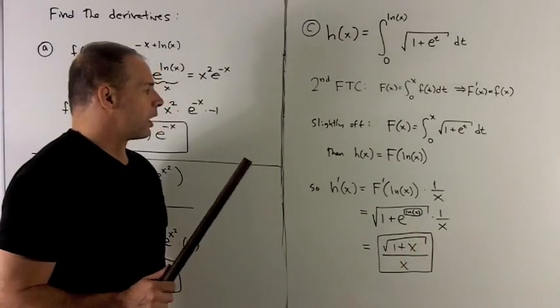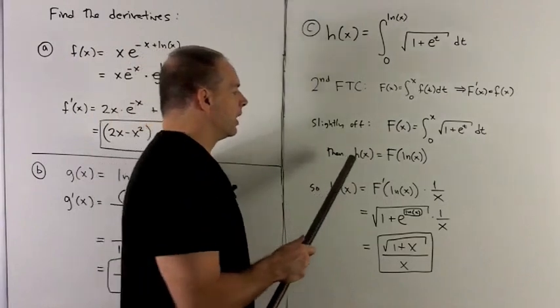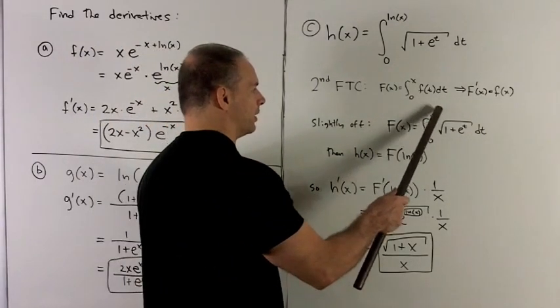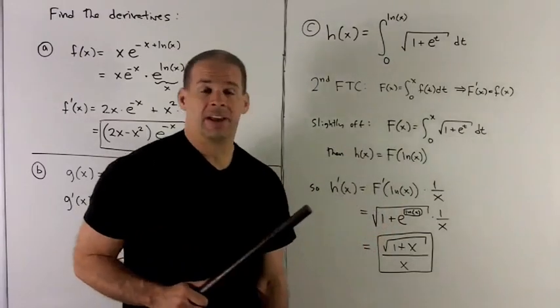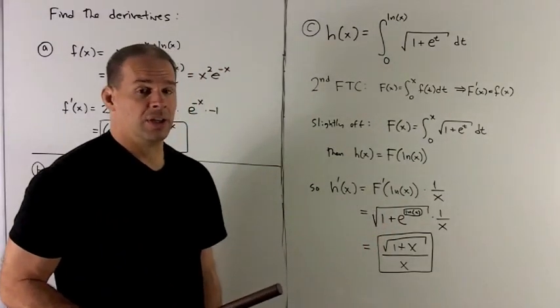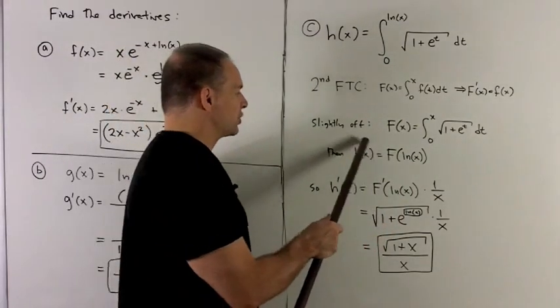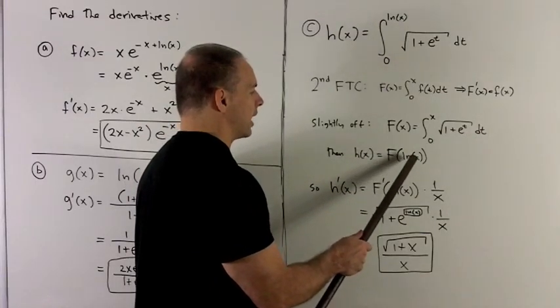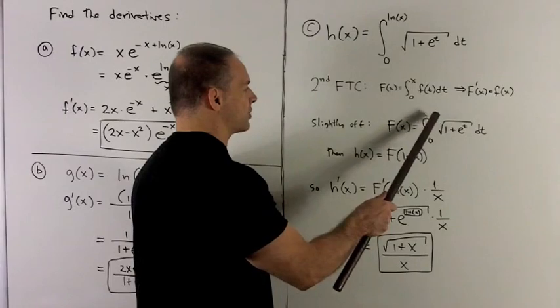for h(x), all I want to do is, well, in this guy here, where I have an x, which is only in this spot, I'd rather have natural log of x. So we can think of this h(x) as just the composition, big F of natural log of x. That's just going to put natural log of x up here.